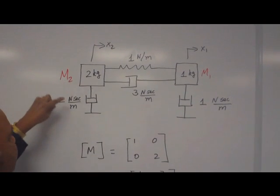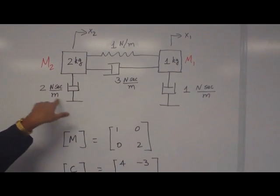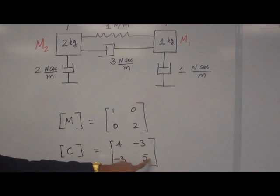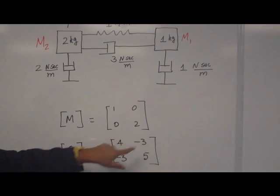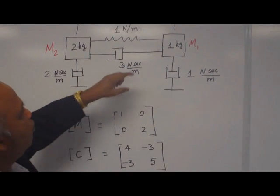Then C22 is sum of all the damping connected to M2. Take the M2, see what all the damping elements. You have 2 and the 3. These 2 are connected to that. So 2 plus 3, 5.